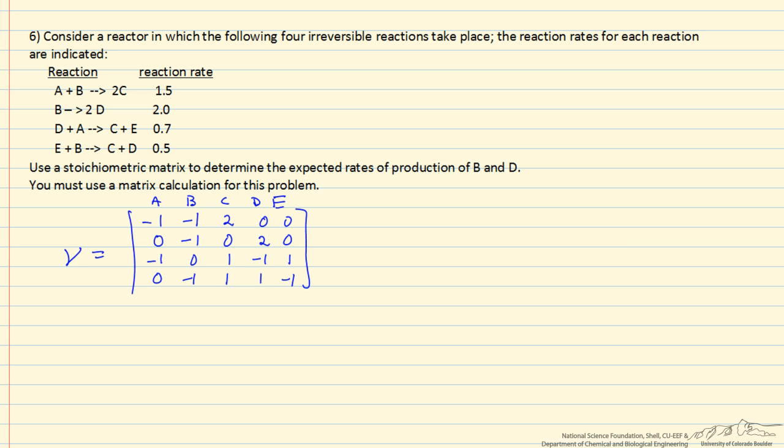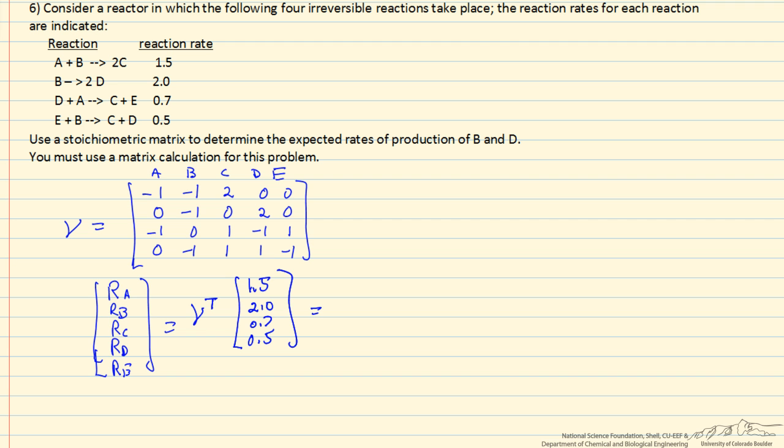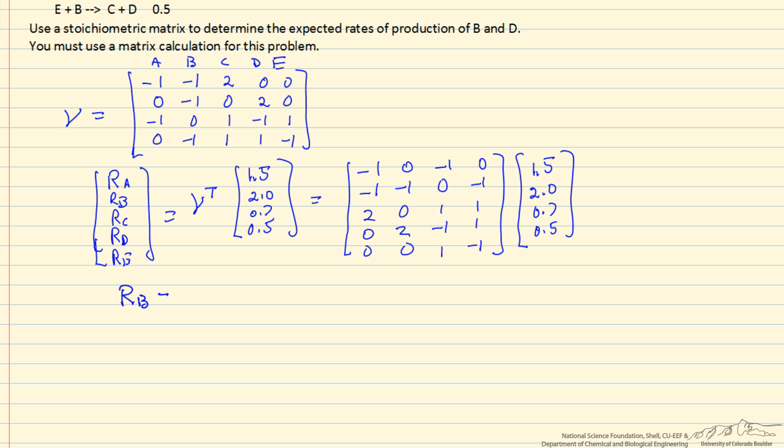So we have this matrix. The production rates are going to be the transpose of this matrix times the reaction rates, which are these four values. So the transpose of the matrix is switching the rows to become columns, and the rate of production of B, we're going to take the second row and multiply by this to get the rate of production of B.